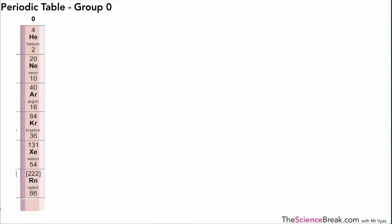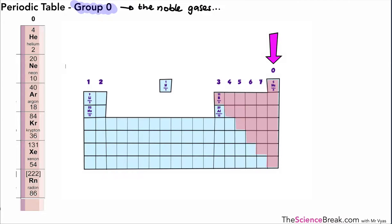Hello, this is a short video about Group 0 in the periodic table. Group 0 is found right at the end there, and it's called the noble gases. Just make a quick note of that - the noble gases.